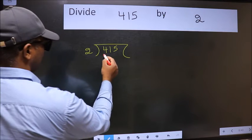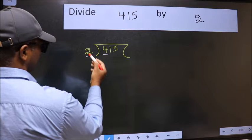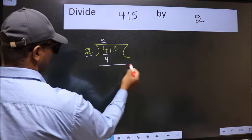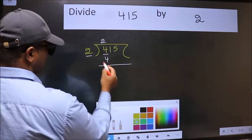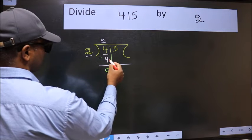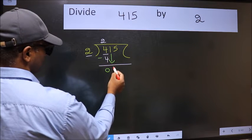Here we have 4 and here 2. When do we get 4 in 2 table? 2 times 2 is 4. Now we should subtract. We get 0. After this, bring down the beside number. So 1 down.